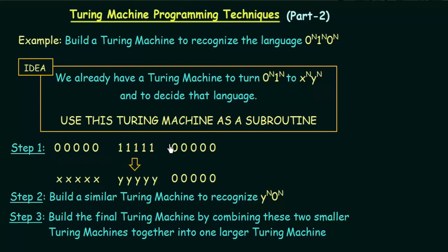We will consider just this part of the string, and we know that this part can be recognized using the Turing machine I just showed you, which was able to turn 0^n 1^n to x^n y^n. Using that Turing machine, we will convert 0^n 1^n to x^n y^n — that means all the zeros are replaced with x and all the ones are replaced with y.